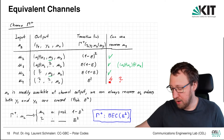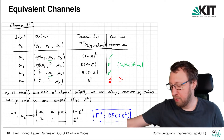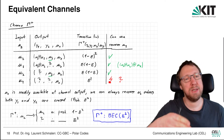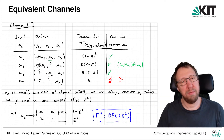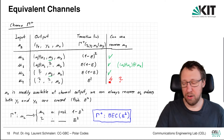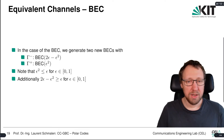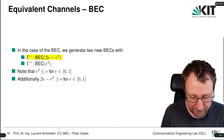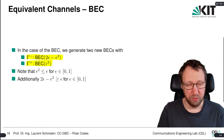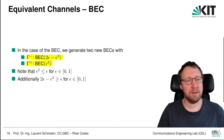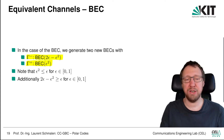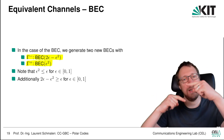To summarize: we have generated two new binary erasure channels. Channel γ⁻ has erasure probability 2ε − ε², and channel γ⁺ has erasure probability ε². Since ε² ≤ ε, γ⁺ has lower erasure probability (better), and 2ε − ε² > ε, so γ⁻ has higher erasure probability (worse). You can clearly see this polarizing effect.